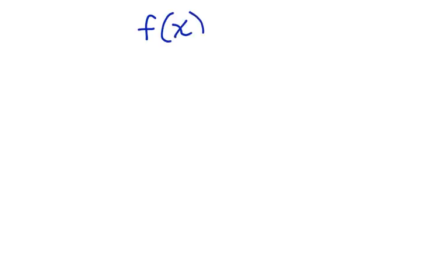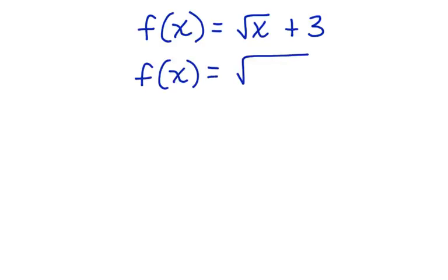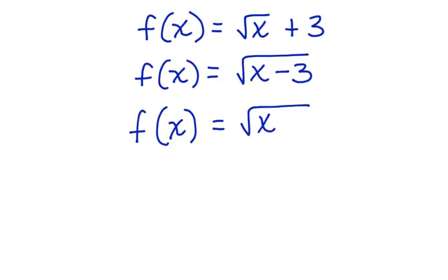Square root functions can be written in many different ways. We could have one that looks like this: f(x) = √(x) + 3. Or we might have one that says f(x) = √(x) − 3. Or we could have one that says f(x) = √(x + 2) − 3.